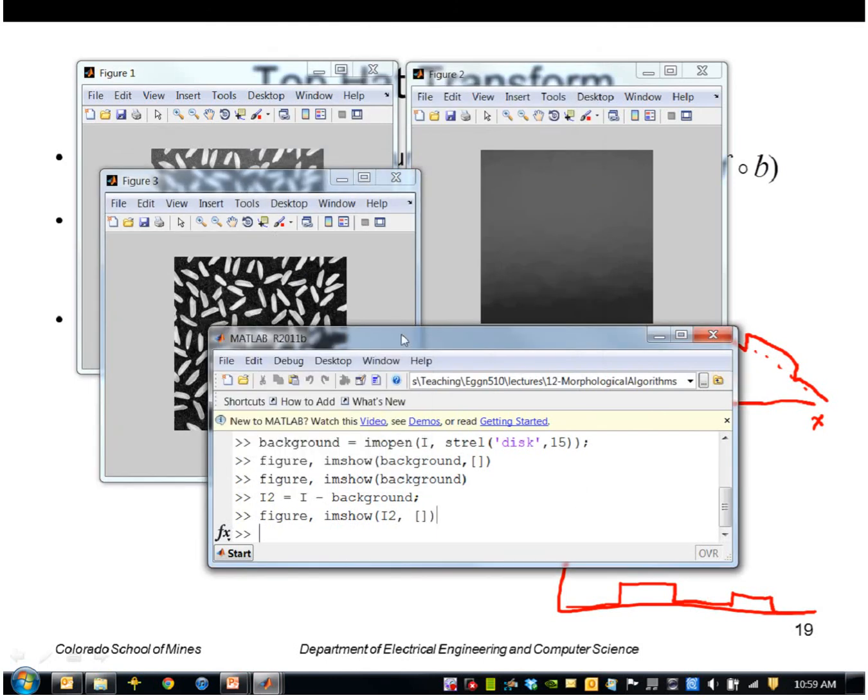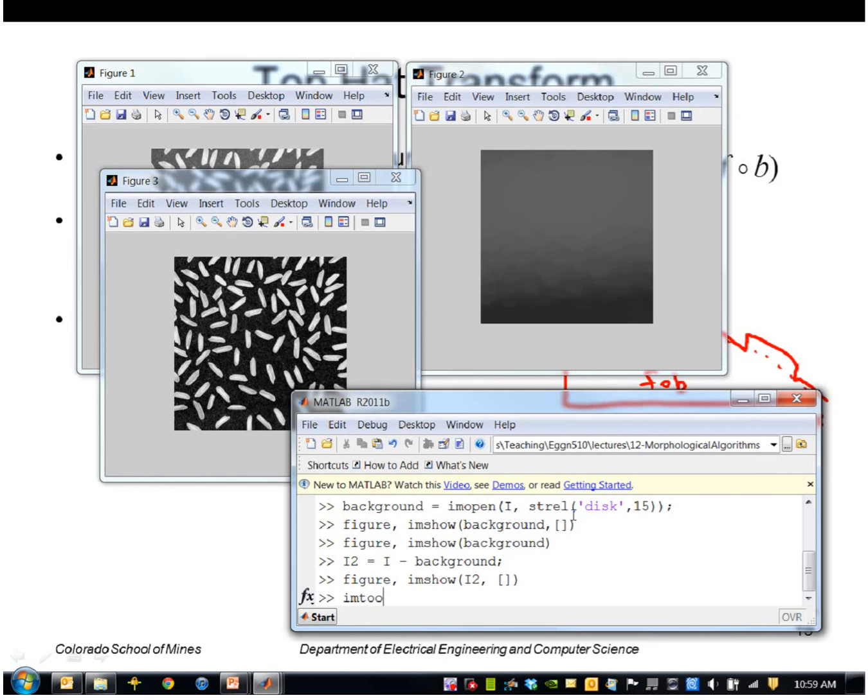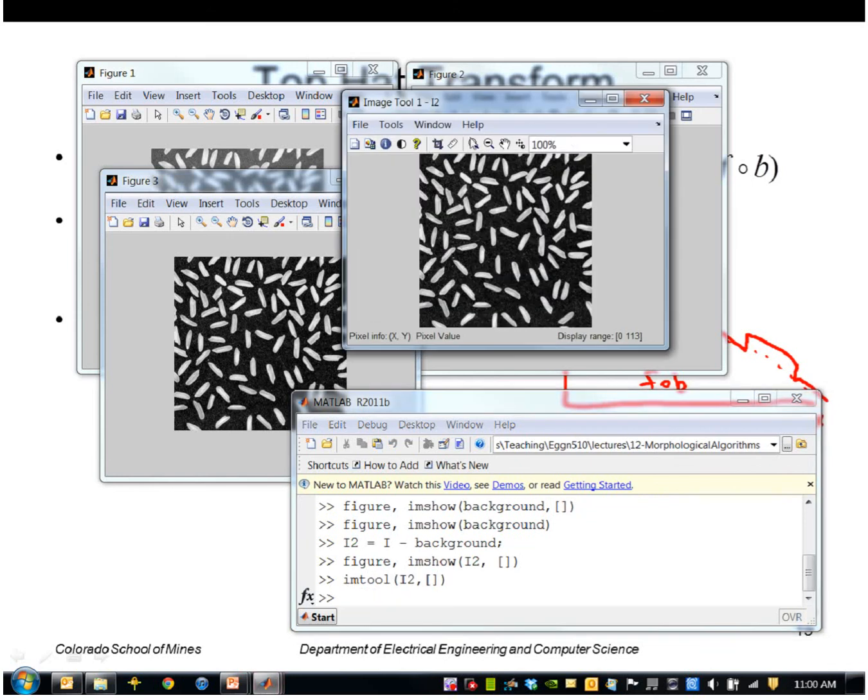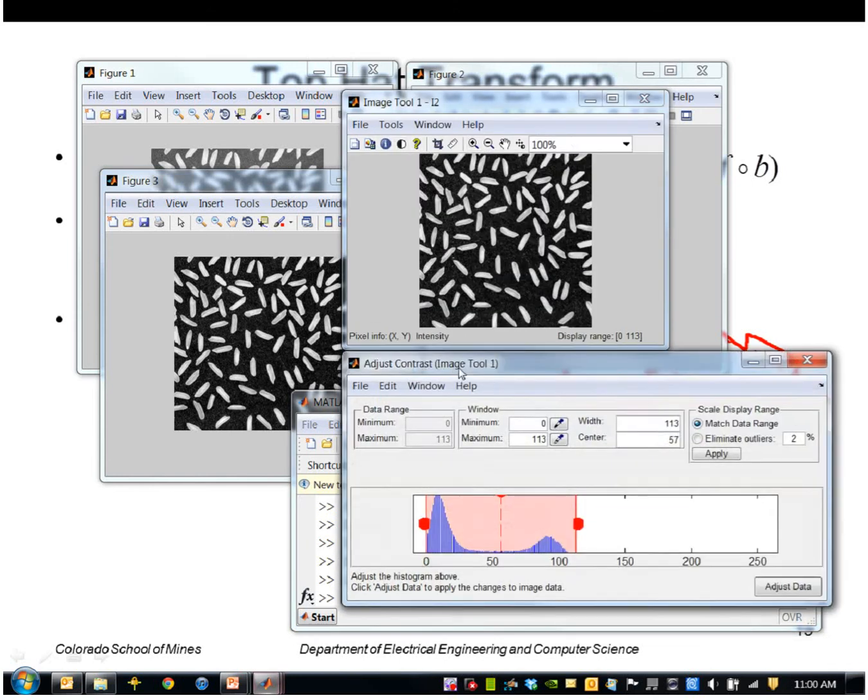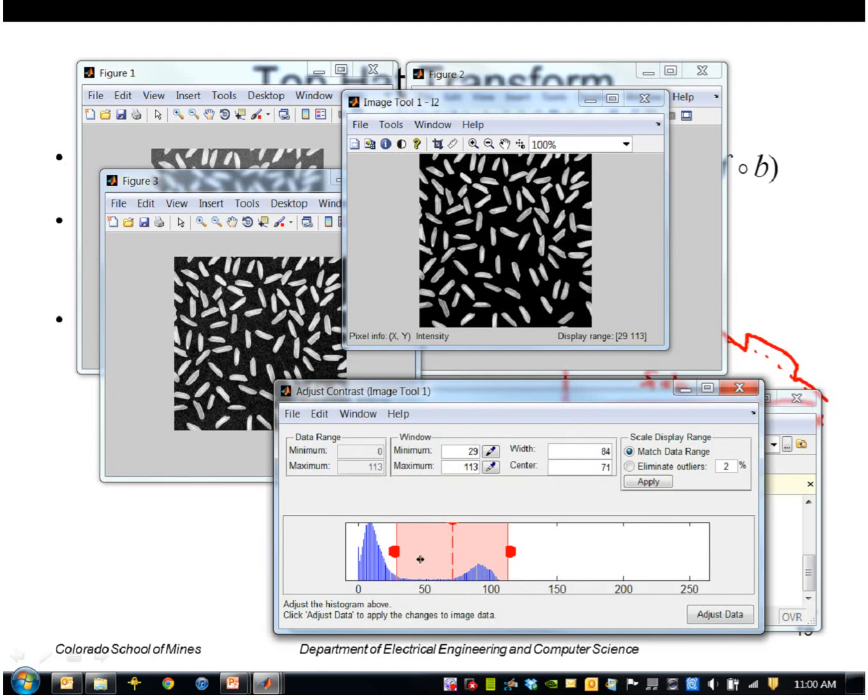So at this point it's easier for me to threshold. If I were to use this tool there's a nice break between the rice grains and the background.